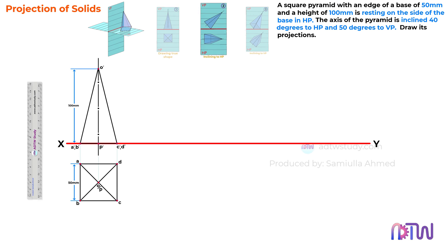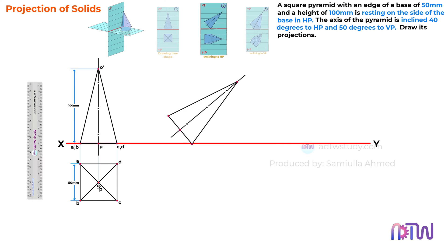Next, let's move on to Step 2. We need to incline the pyramid axis to 40 degrees. When we incline the axis of the pyramid by 40 degrees, the base of the pyramid will be inclined at 50 degrees with the reference line. To achieve this 50 degree angle, we subtract the angle made by the axis from 90 degrees, resulting in 50 degrees. For instance, if the angle made by the axis was 30 degrees, we would subtract 30 from 90, giving a base angle of 60 degrees. In this case, the angle made by the base with the reference line is 50 degrees.